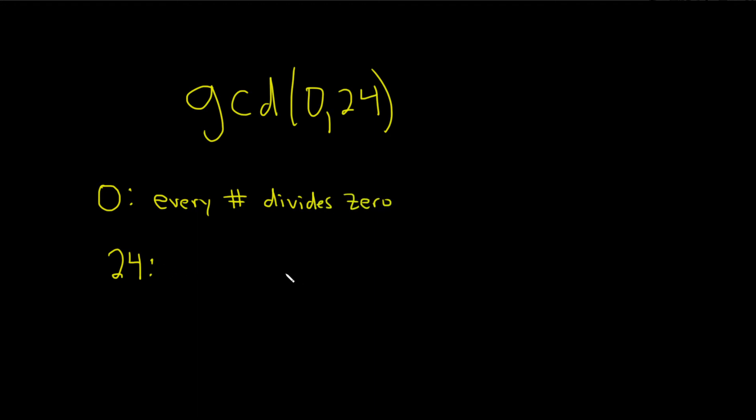So we're basically looking at all the divisors of 24 and then just taking the biggest one. So what are the divisors of 24?